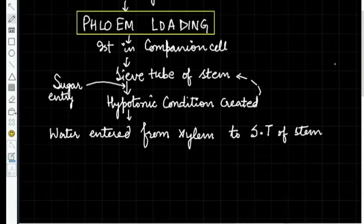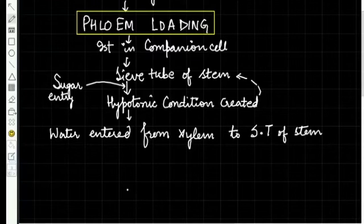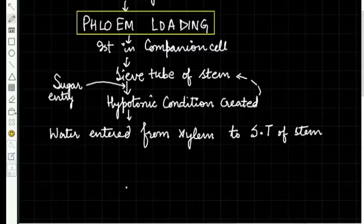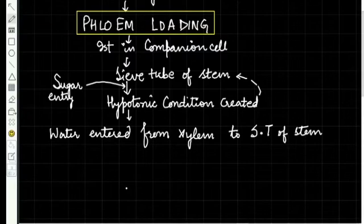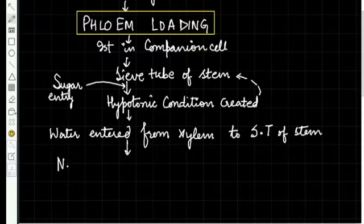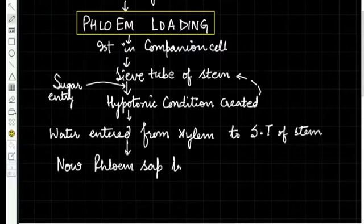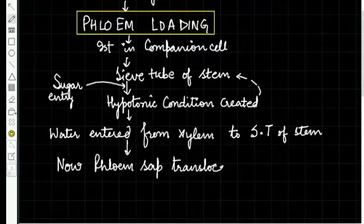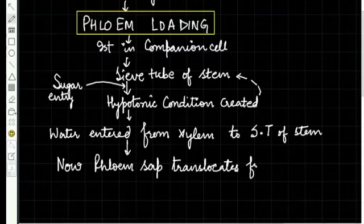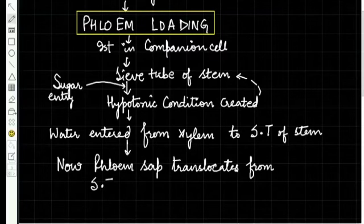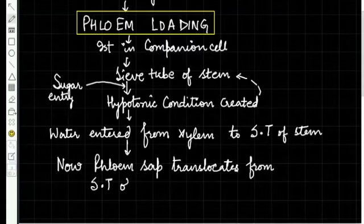We have to keep one thing in mind: we will not say food particles, rather we will call it phloem sap, as phloem sap carries water in addition to the solute, that is sugar particle. Water enters from xylem to sieve tube of stem, which raises hydrostatic pressure. Now phloem sap translocates from sieve tube of stem to sieve tube of root.